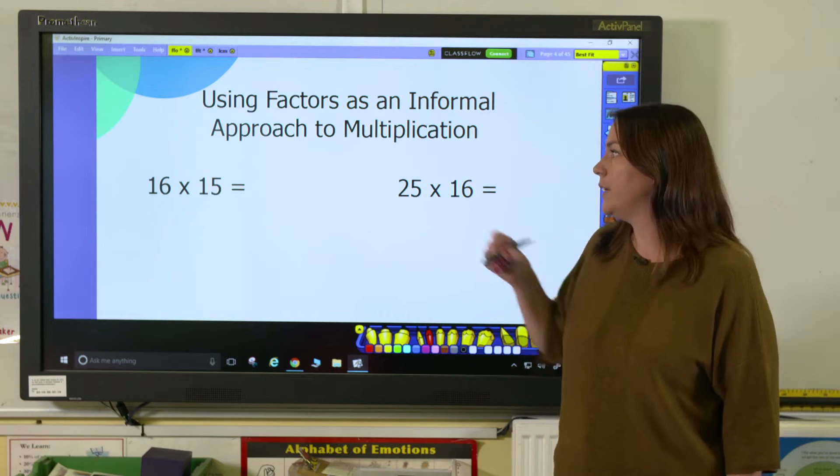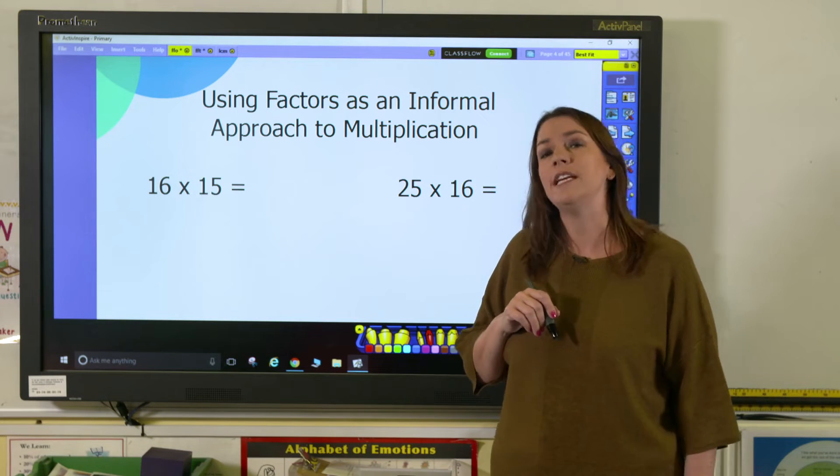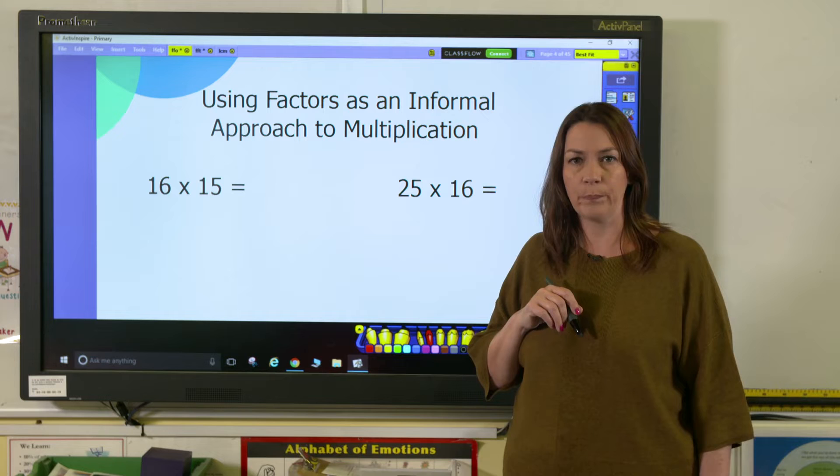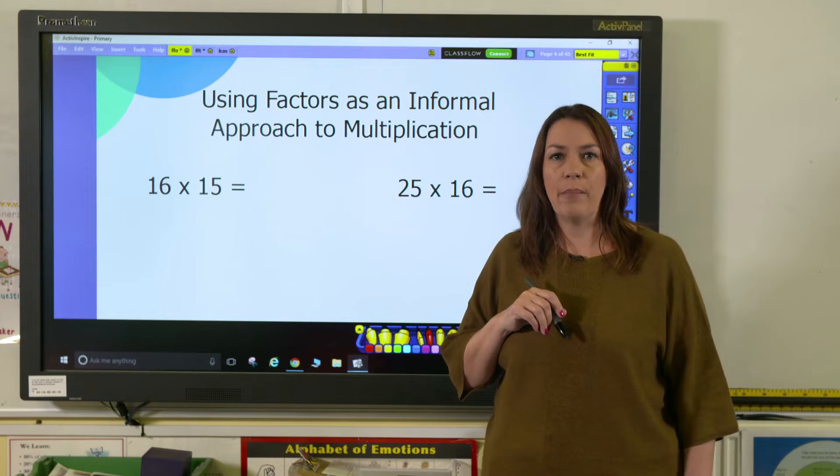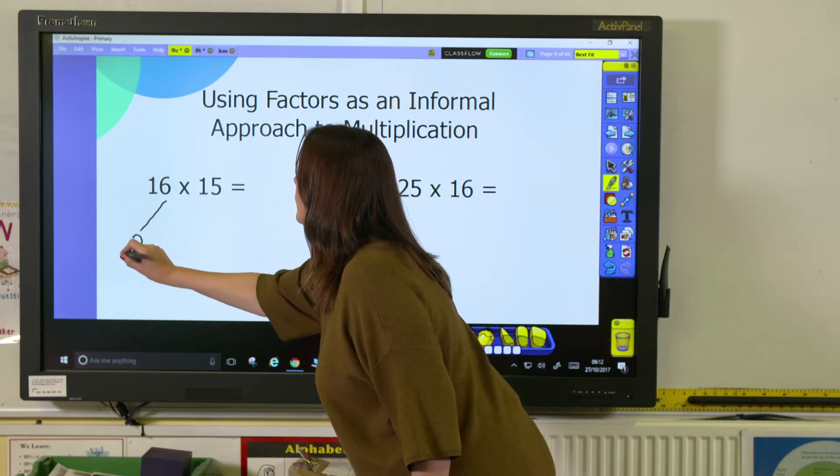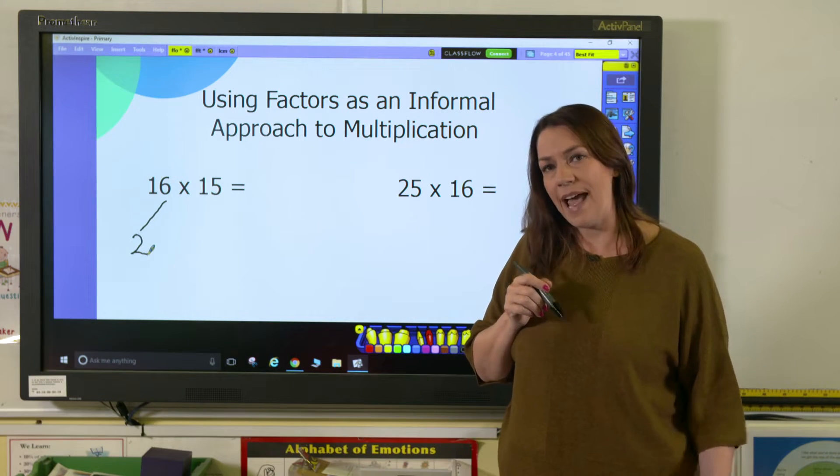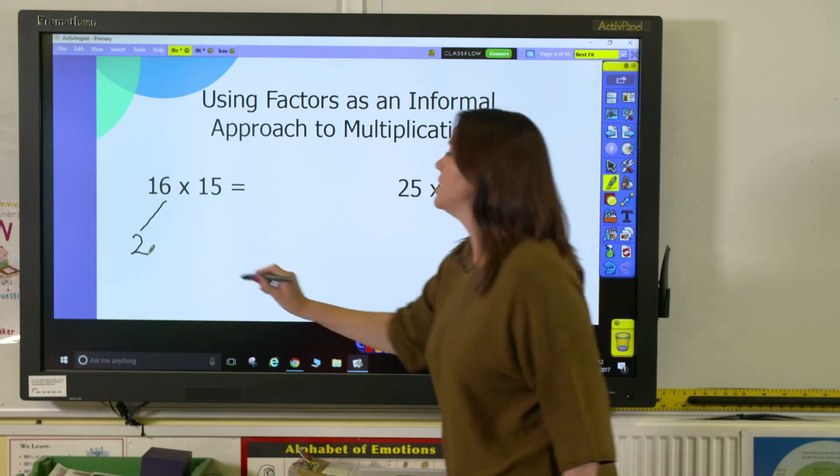So first we have a calculation here, 16 times 15. And we know that 15 is a number that can be easily doubled or multiplied by 2. 16 is an even number so one of its factors must be 2. And we know that the factor pair that makes 16 is 8 and 2, so 2 times 8.